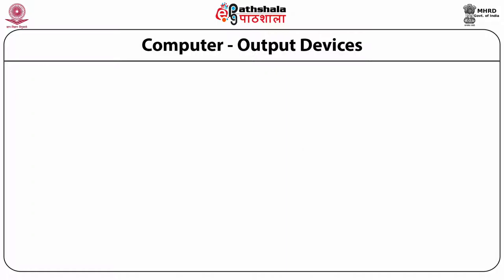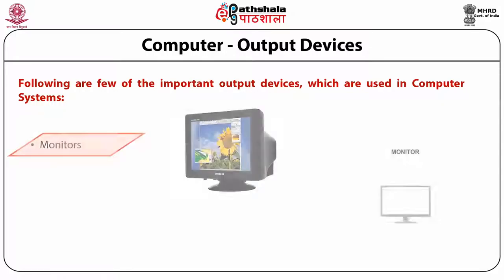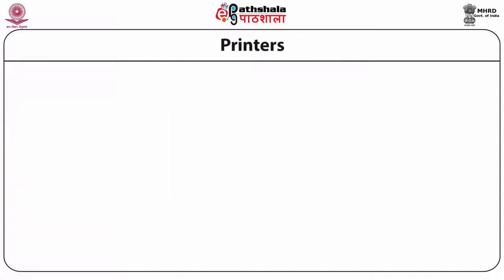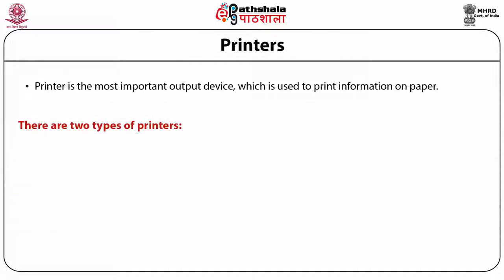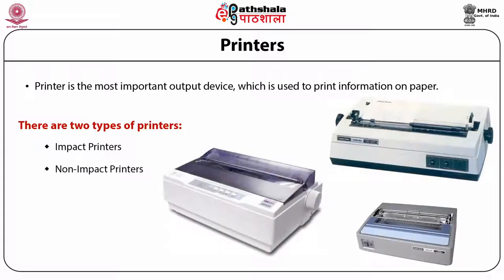Coming to the output devices, the following are some of the important output devices used in computer systems: monitors, graphic plotters and printers. When you talk about printers, there are two important types: one we call it as impact printer and the other one is a non-impact printer.